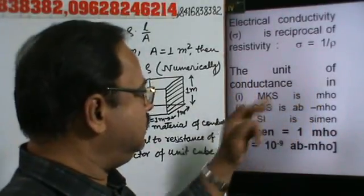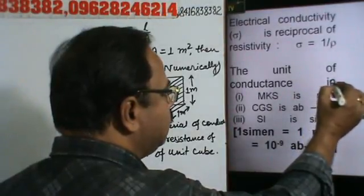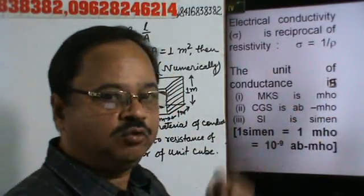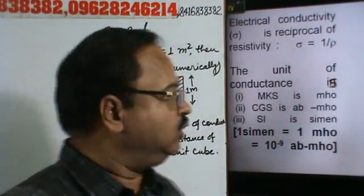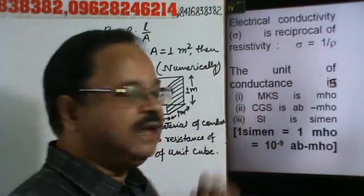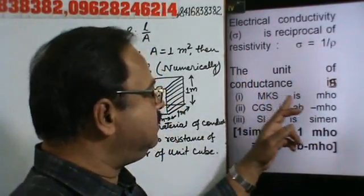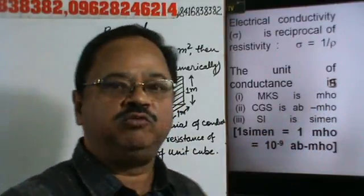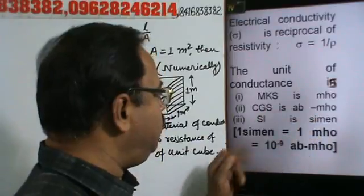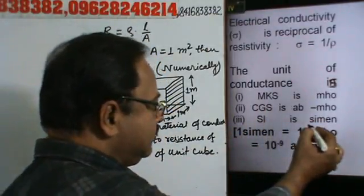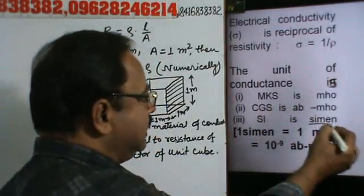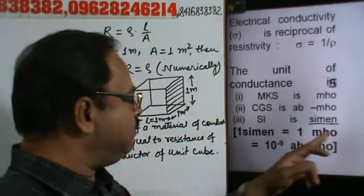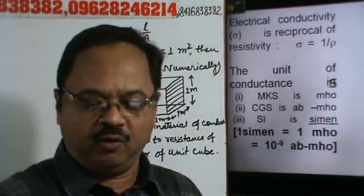Now, the unit of conductance: in MKS units, the unit of conductance is mho — because the unit of resistance is ohm, so the reciprocal is mho. In CGS units, it is called ag-mho. In SI units, it is called Siemen, denoted by S. The relation is: one Siemen is equal to one mho, which is equal to ten to the power minus nine ag-mho.